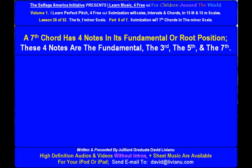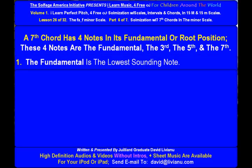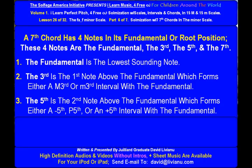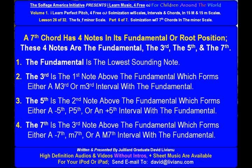These four notes are the fundamental, the third, the fifth, and the seventh. The fundamental is the lowest sounding note. The third is the first note above the fundamental, forming either a major third or a minor third interval. The fifth is the second note above the fundamental, forming either a diminished fifth, perfect fifth, or augmented fifth.